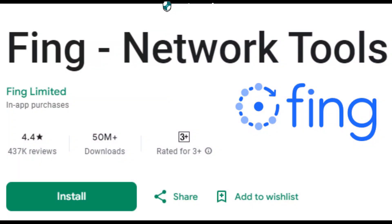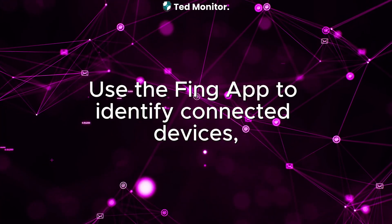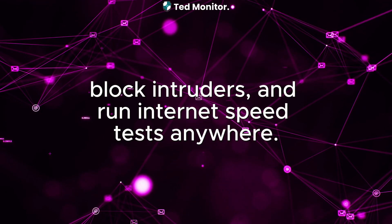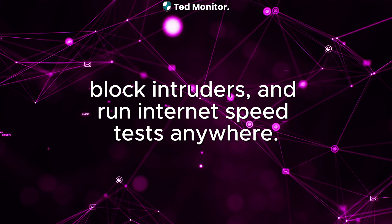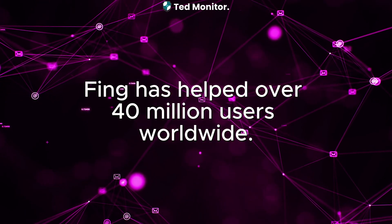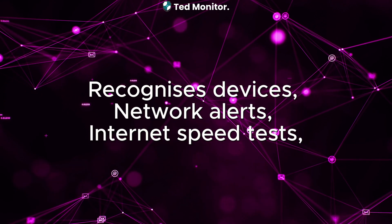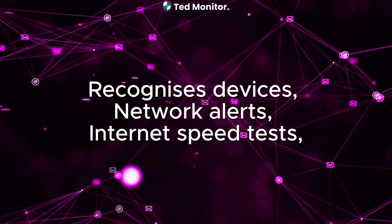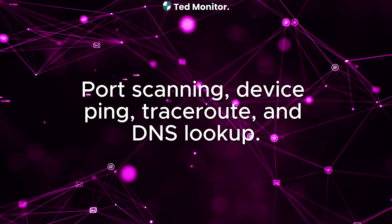Number 2: Fing. Use the Fing app to identify connected devices, troubleshoot network and connectivity issues, block intruders, and run Internet speed tests anywhere. Fing has helped over 40 million users worldwide. Fing also offers services like scanning any network, recognizing devices, network alerts, Internet speed tests, port scanning, device ping, traceroute, and DNS lookup.